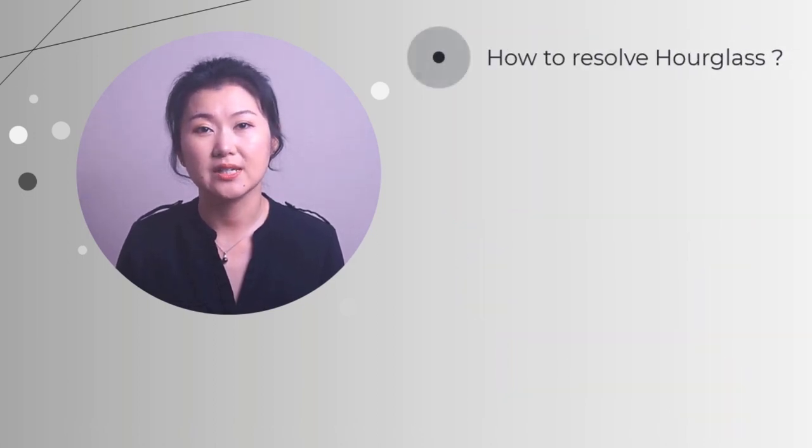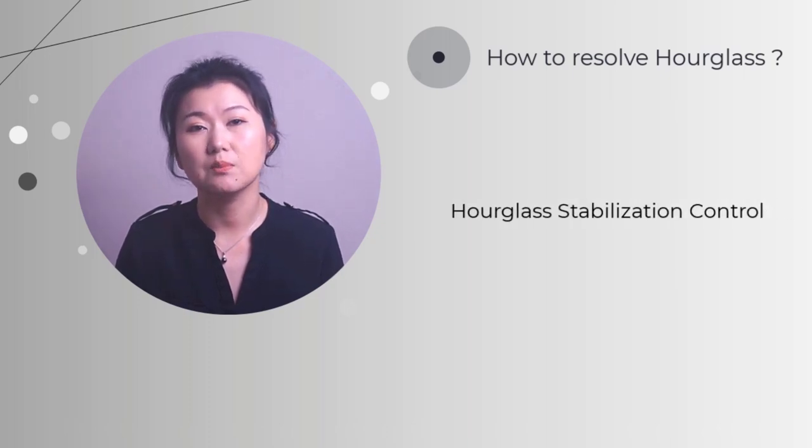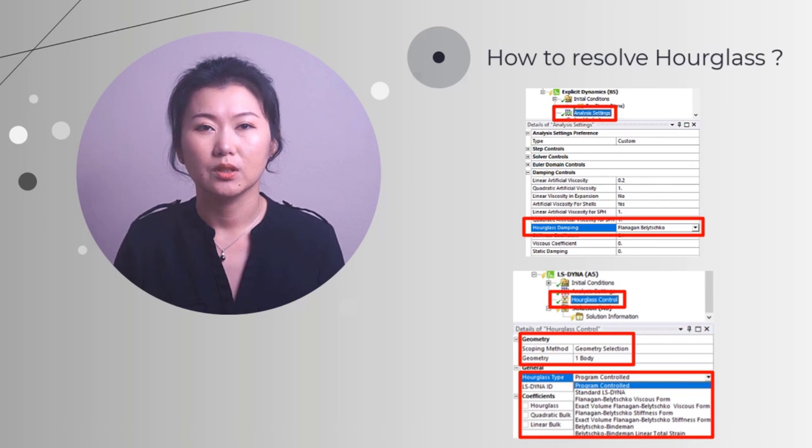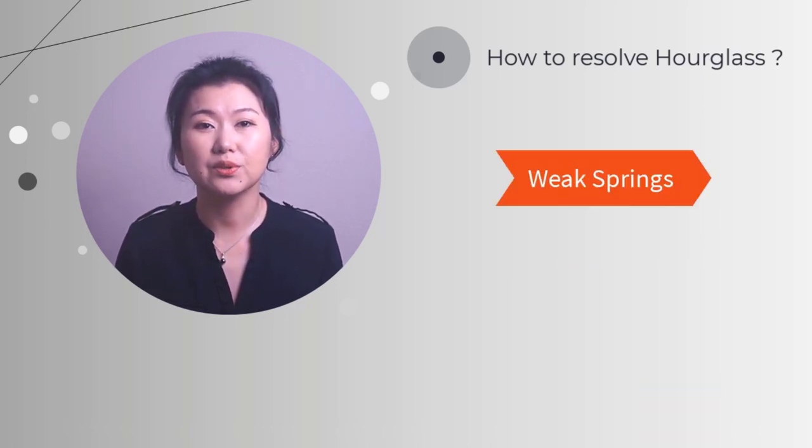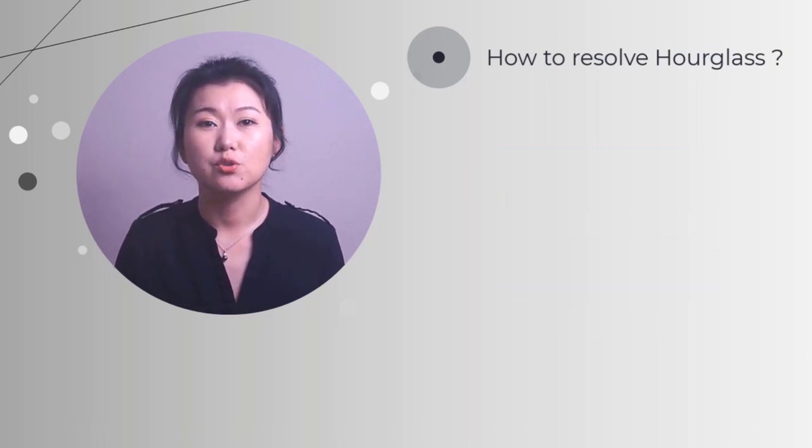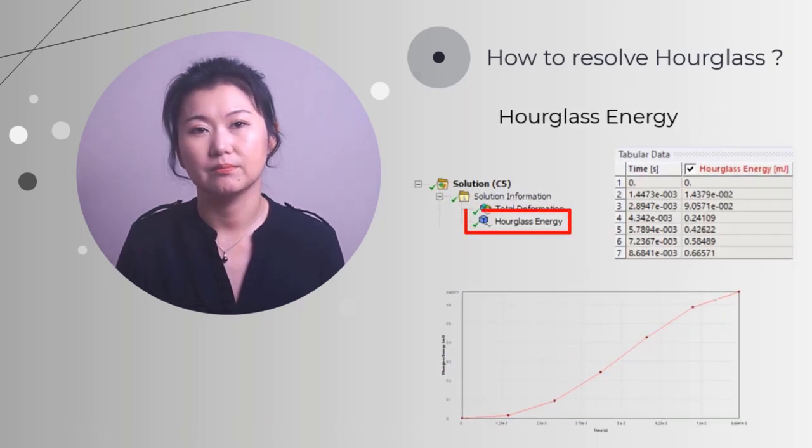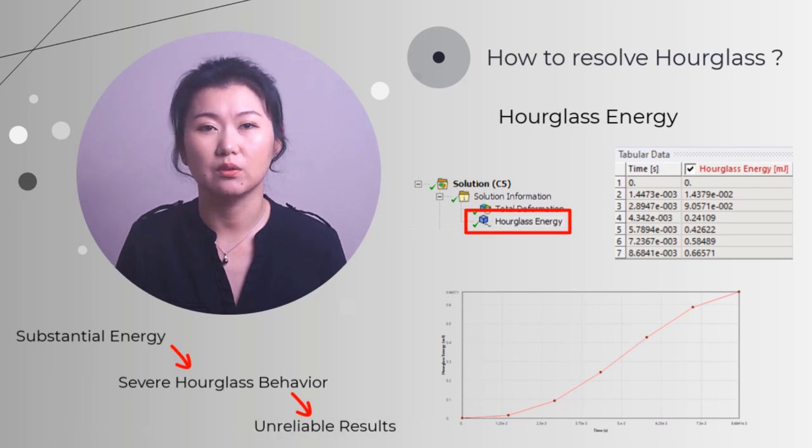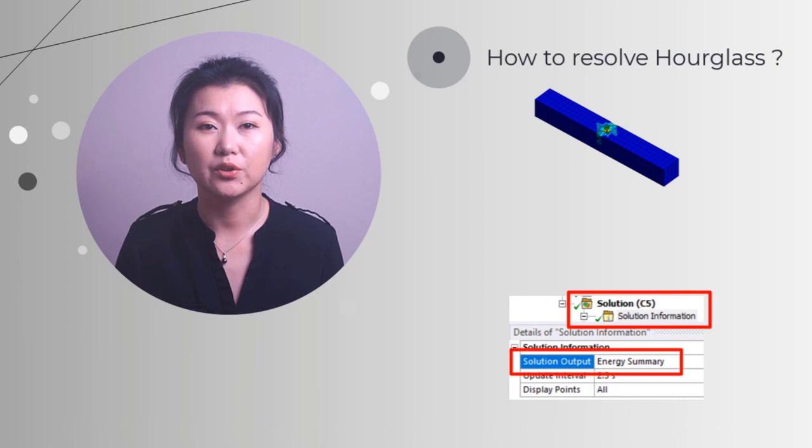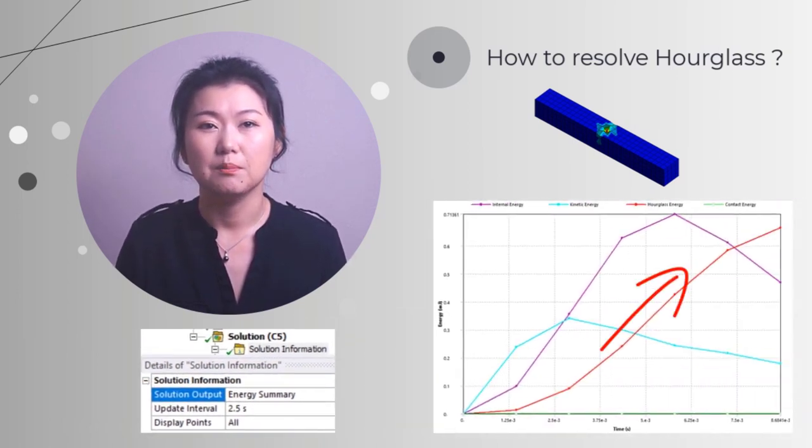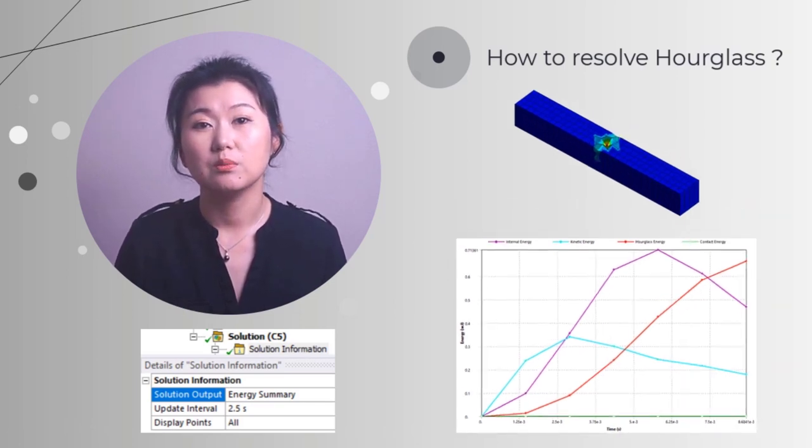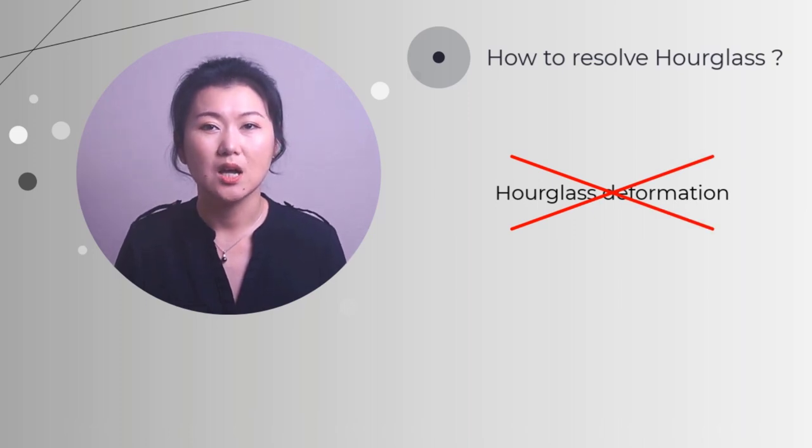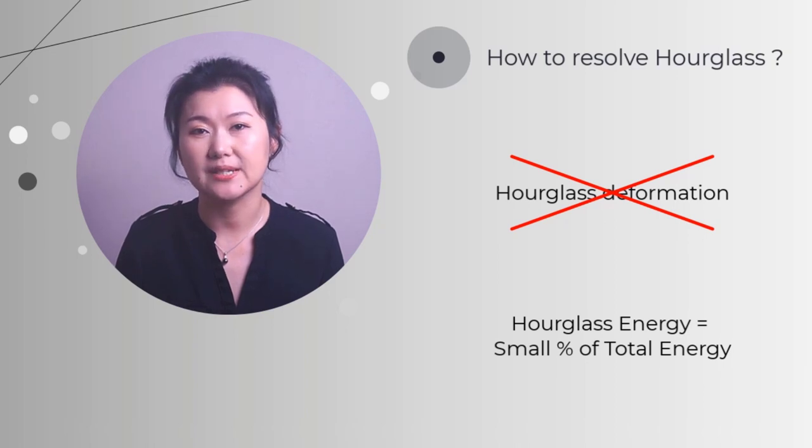So how to resolve hourglass if it occurs in the simulation? Using hourglass stabilization control is a common solution. This can often be added to the entire model or it can be selectively applied to specific regions in the model. We can think of hourglass control as a method to add weak springs or dampers to the model that can store energy. At the same time, we should always monitor the hourglass energy added to the system. Because if there is substantial energy added to the system, it indicates that hourglass behavior is severe and the results should not be thought as reliable. For the beam problem we just showed, from the energy summary, we can see that substantial hourglass energy has been added to it here. But it still shows hourglass behavior in the results.